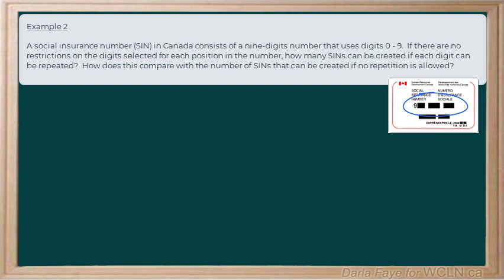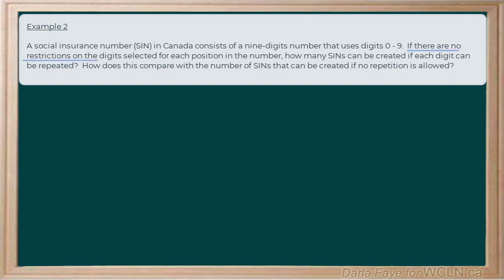Now, we're going to look at two different scenarios here or two different conditions. The first is that there are going to be no restrictions on the digits that can be selected for each position in the number. And it wants to compare that to how many possible SIN numbers we could create if no repetition is going to be allowed. So, we'll break these down into two different scenarios and then we'll compare them at the end.